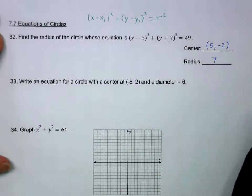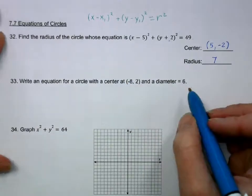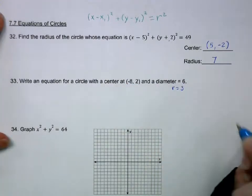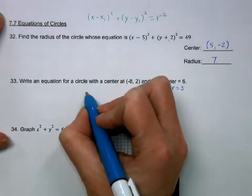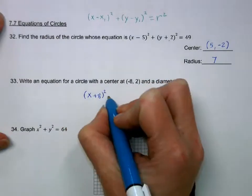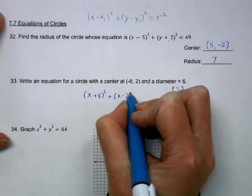Writing the equation, if the diameter is 6, my radius is going to be 3. And I'm just going to have X plus 8 squared plus X minus 2 squared equals 3 squared, which is 9.